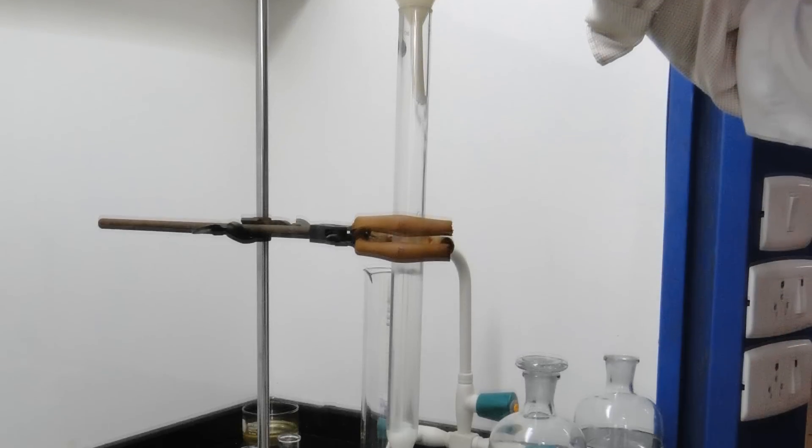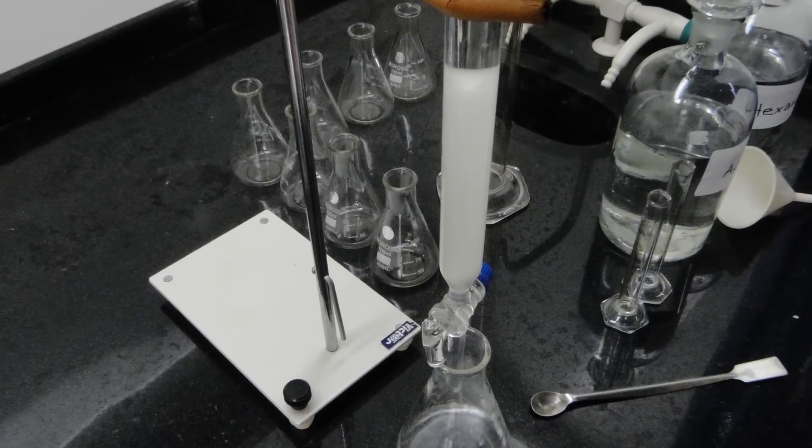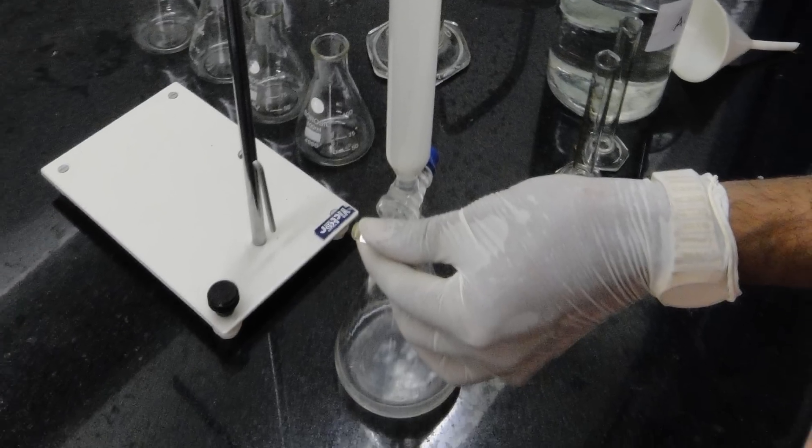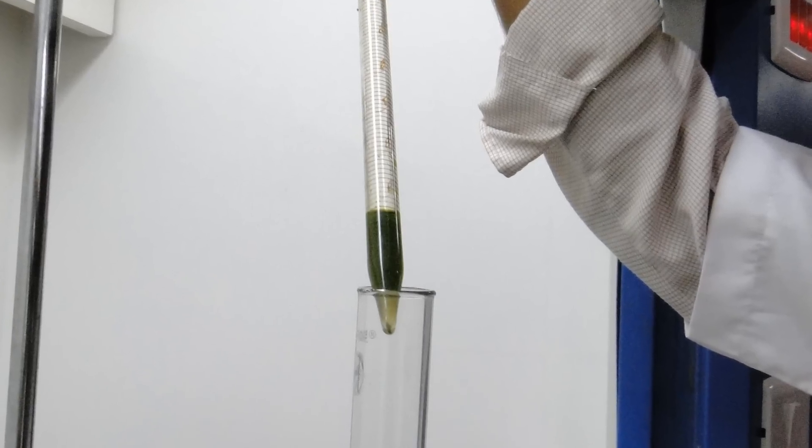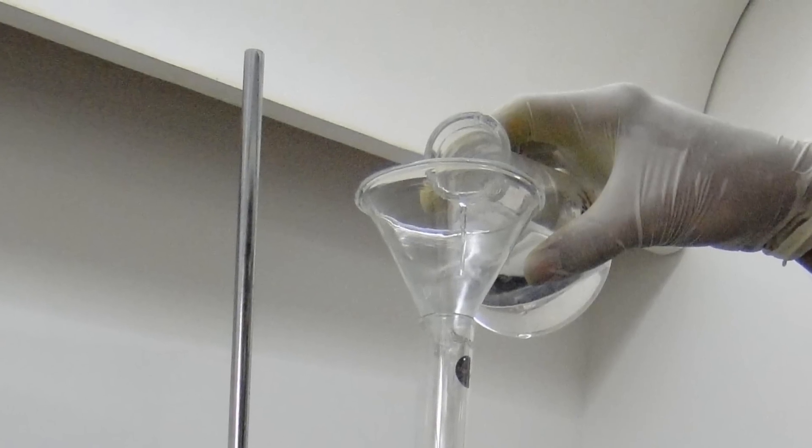A chromatography column is packed with about 25 grams of silica gel in hexane and the crude extract adsorbed on silica gel is added to the top carefully. The column is then eluted using hexane.